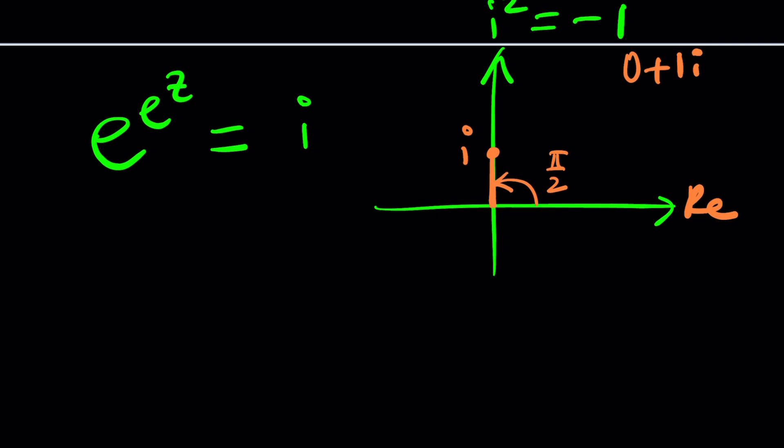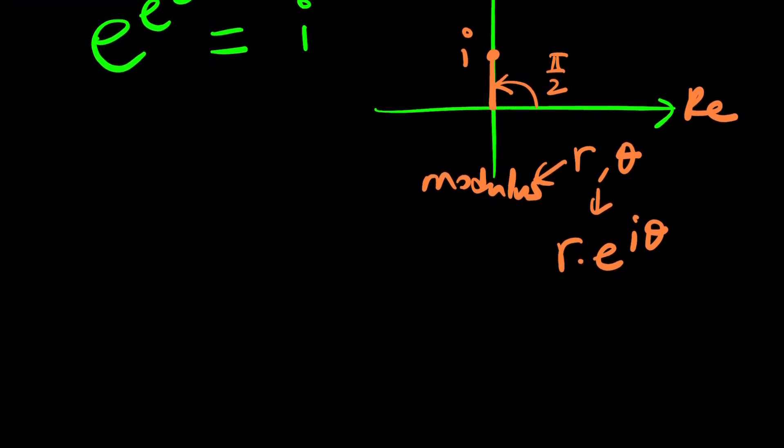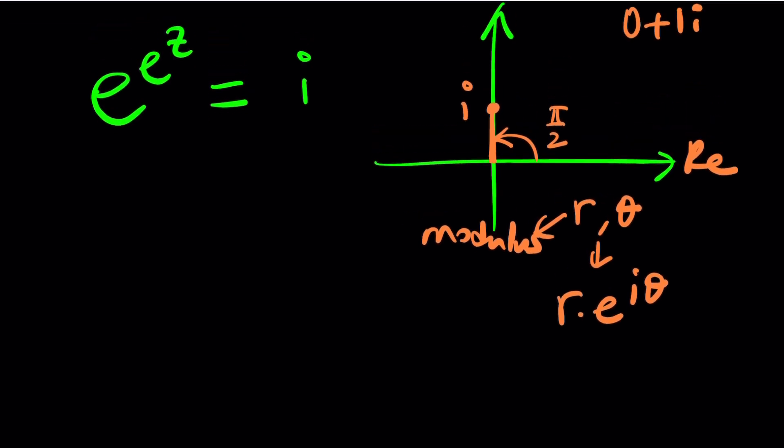So any complex number that has a modulus r and an argument θ can be written as r times e to the iθ. r is the modulus or it's also called the absolute value, which is given by the distance from 0. For i, it will be 1 because it's 1 unit away from 0. And the θ would be π over 2. So we can basically write i as e to the power i times π over 2.